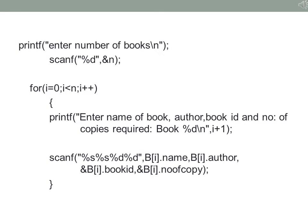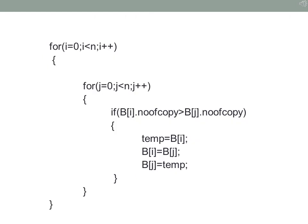Initially you enter the number of books stored to n. Using a loop for i equal to 0, i less than n, you read the details of each book: book name, author, book ID and the number of copies. Now you sort the details of the books based on the number of copies. You can use any sorting algorithm — here a simple sorting algorithm has been used.